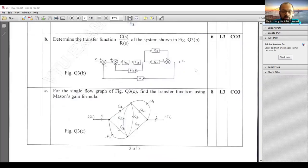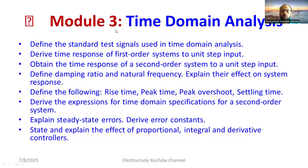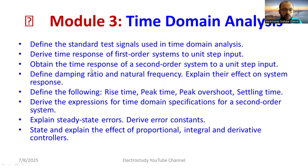Module 3 contains many analytical derivations. First, study the different standard test signals: unit step, unit ramp, unit parabolic, sinusoidal, and impulse signals. Then derive the time response of first-order and second-order control systems — derivations will be in the video description. Define the damping ratio.